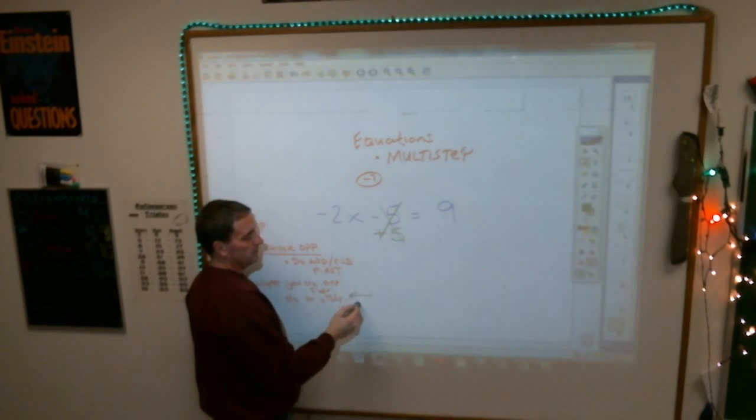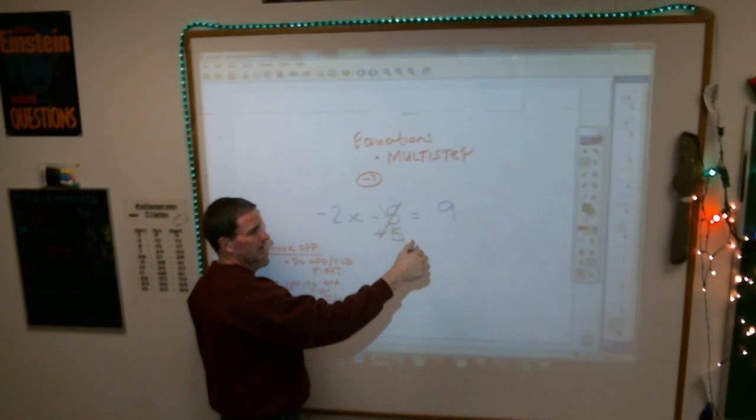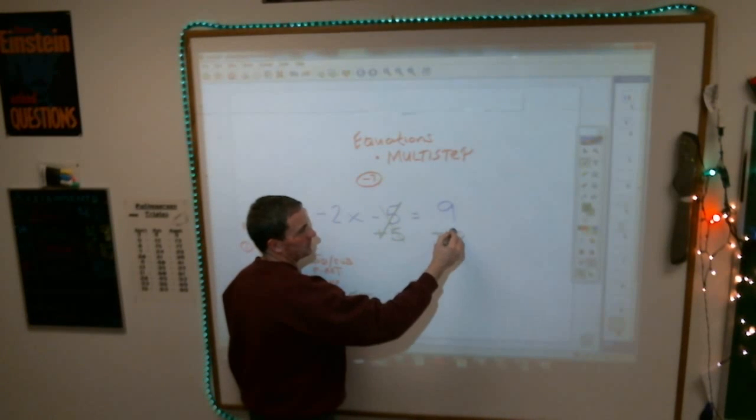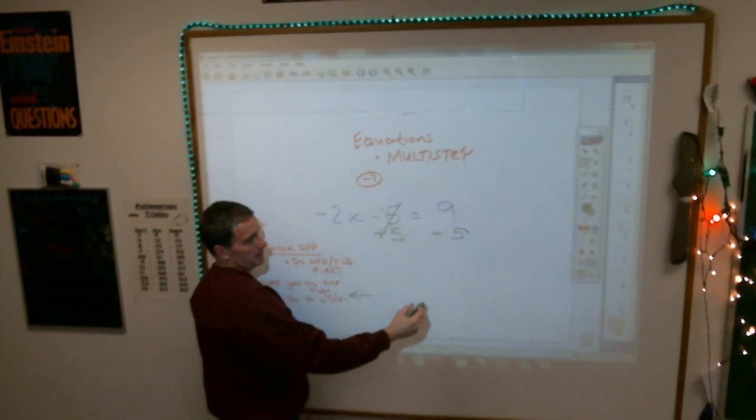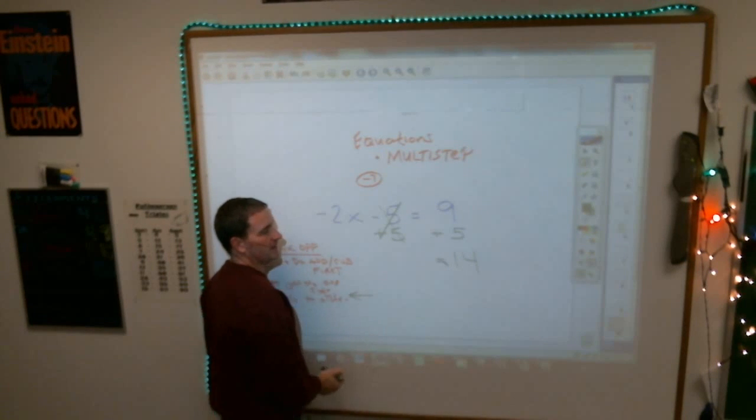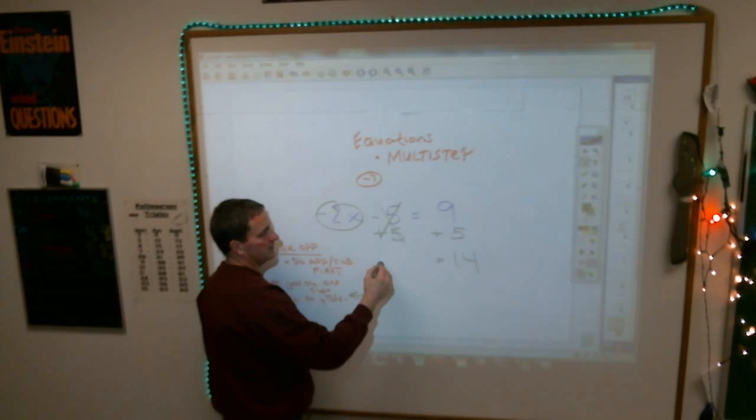But my little rule down here says, if I do it to the left side, I have to do it to the right side, so I must plus five over here. And when I add that five over there, I get that. I still have this left on the other side.